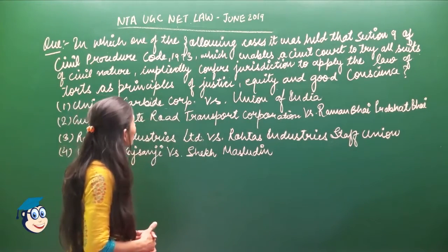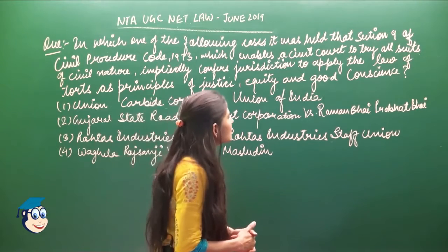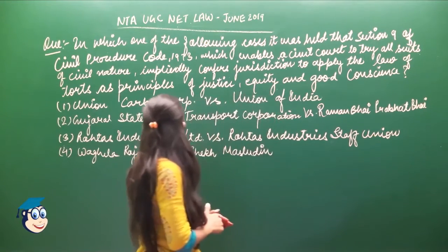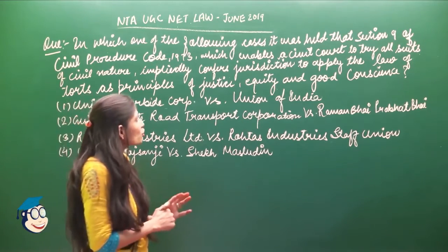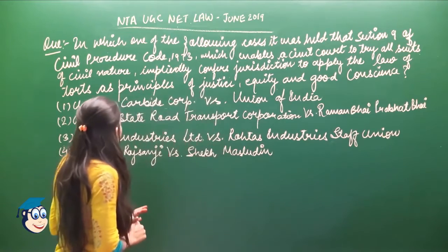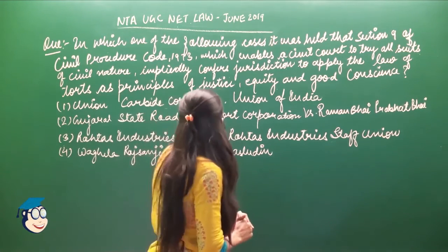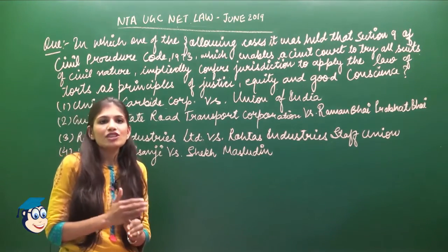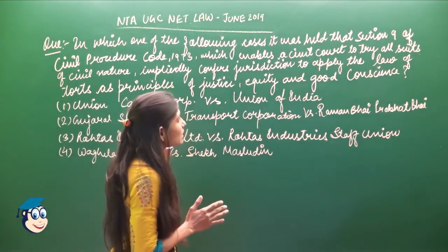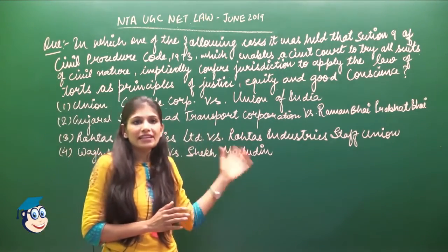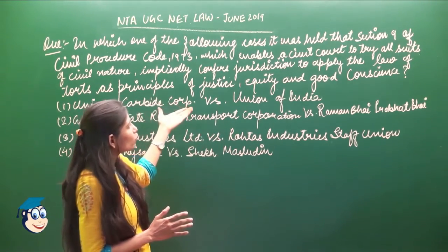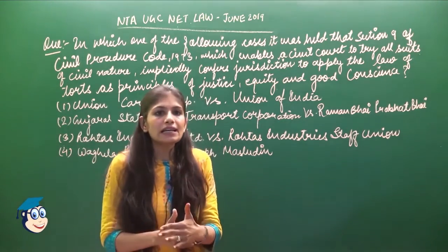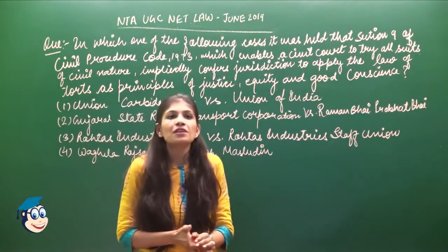The next question was: In which one of the following cases was it held that Section 9 of the Civil Procedure Code 1973 — which enables a civil court to try all suits of civil nature — impliedly confers jurisdiction to apply the law of torts as principles of justice, equity, and good conscience? Section 9 of CPC 1973 determines the jurisdiction of civil courts and specifies which cases they can deal with.